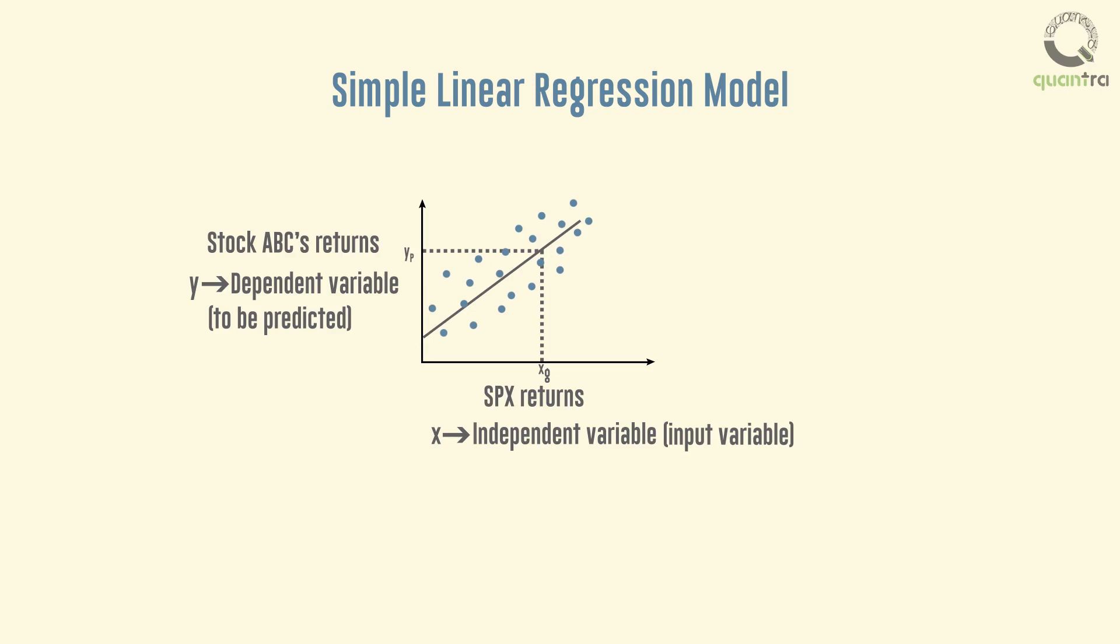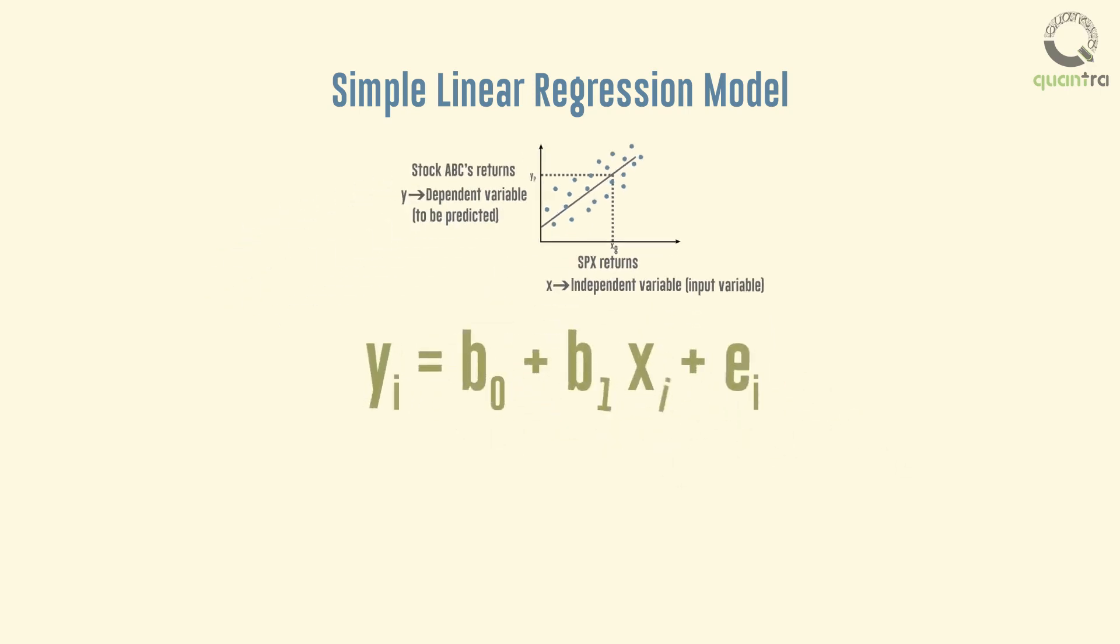The following regression equation describes that relation: yi equals b0 plus b1 times xi plus ei. This equation states that the dependent variable y is equal to the intercept b0 plus a slope coefficient b1 times the independent variable x plus an error term e. The error term represents the portion of the dependent variable that cannot be explained by the independent variable. We refer to the intercept b0 and slope coefficient b1 as the regression coefficients.